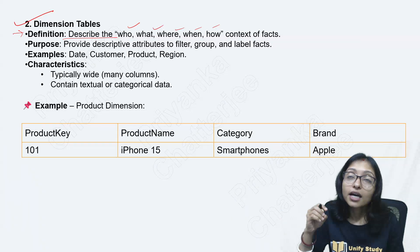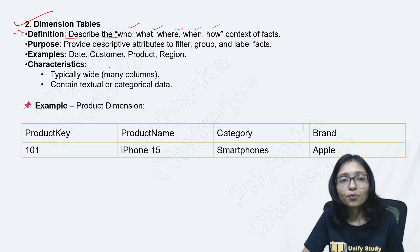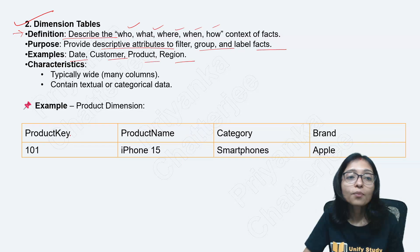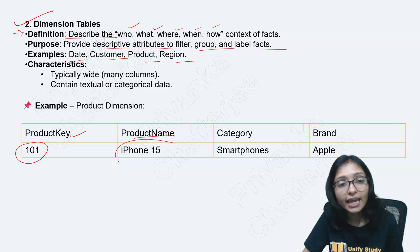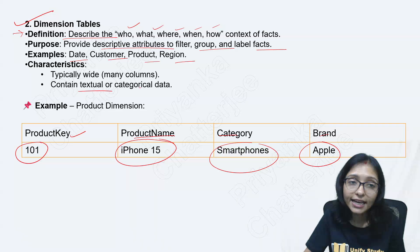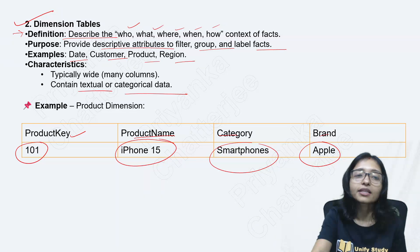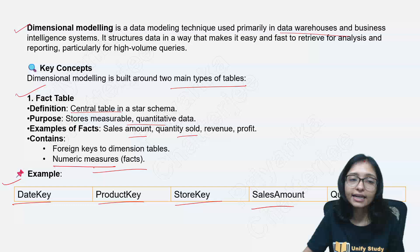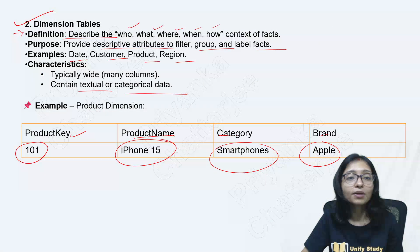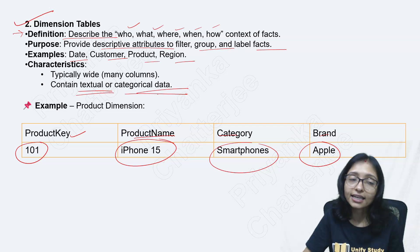The dimension table stores descriptions and provides descriptive attributes to filter, group, or label data — like date, customer, product, and region. For example, product key, product name, category, brand — this is textual or categorical data. Remember, the fact table holds numeric and quantitative data, while the dimension table holds descriptive, textual, or categorical data.